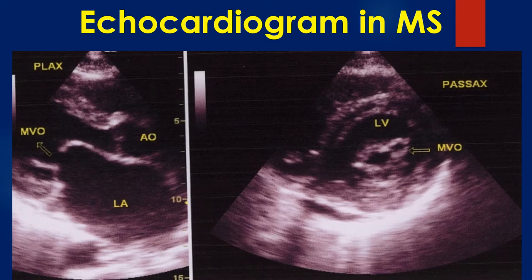The left panel shows the parasternal short axis view. The mitral orifice is seen within the cross section of the left ventricle. The anterior and posterior leaflets are seen in cross section and are thickened. The commissures are fused. The parasternal long axis view gives an assessment of the subvalvar apparatus. Subvalvar fusion may result in poor results after valvotomy as it can produce secondary obstruction beyond the valve.